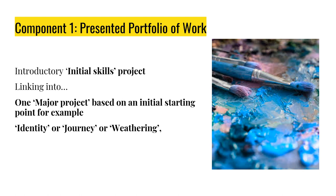So component one, the portfolio of work, is the bigger of the two projects. We always start with an initial skills project in Year 10 which will last until Christmas time, and then you start your major project after that first Christmas. You might get a starting point like 'identity', or your stimulus might be 'journeys' or 'weathering', for example. Everybody gets the same starting point and then we build on how you want to interpret that word, looking at lots of artists, techniques, and ways of interpreting the ideas around your starting point.